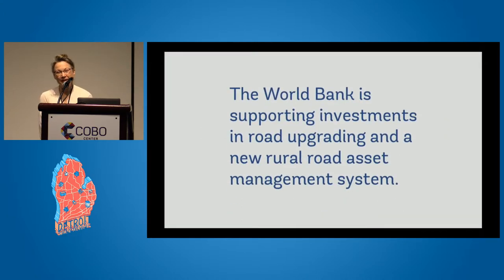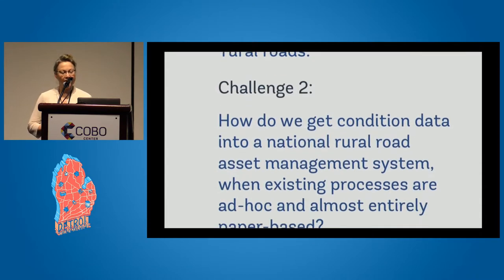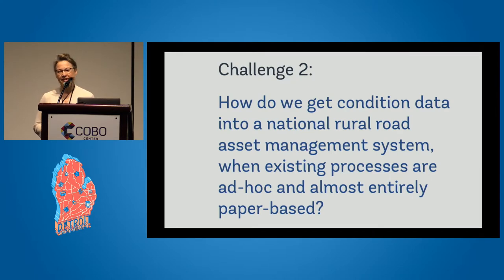The World Bank is supporting investments in rural road upgrading, as well as investment in a new rural road asset management system. But there are some challenges. Challenge one: how do we prioritize these investments when the national government doesn't have a map of where all their rural roads are? And two: after they procure this fancy schmancy rural road asset management system, how are they going to get data to put in it when the existing processes are entirely paper-based and ad hoc?